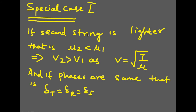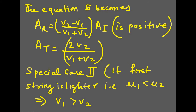Special case 1: the second string is lighter, that is, mu2 is greater than mu1. When mu2 is greater, v2 is greater because v equals root of T/mu and tension is the same in both strings. The phases are the same: delta_t equals delta_r equals delta_i. Equation 5 is positive because v2 minus v1 is positive, and A_i is positive. Nothing new here.